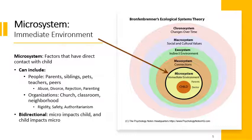Also in the microsystem: parents, doctors, neighbors — are the neighbors kind and accepting of the child, making them feel safe or threatened? Siblings, the church — not just the structure itself, but how the interactions within the church engage with the child: are they meant to feel shame or love? The classroom includes all peers, kids, principal, and whoever interacts with the child. The neighborhood includes neighbors interacting with the child.